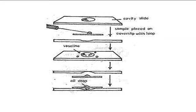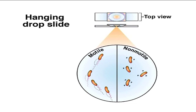Let us learn about the hanging drop mount. It is used to observe the motility, germination, or fission of microorganisms as shown in figure 3. In this method, a cavity slide which has a circular concavity in the center is used. The periphery of the concavity is smeared with Vaseline. A drop of liquid microbial culture is placed in the center of the cover glass; if the culture is grown on solid media, it is mixed with a drop of distilled water before placing on the cover glass. The cover glass is inverted over the concavity so the drop hangs freely and the edges adhere tightly to the Vaseline-coated periphery.